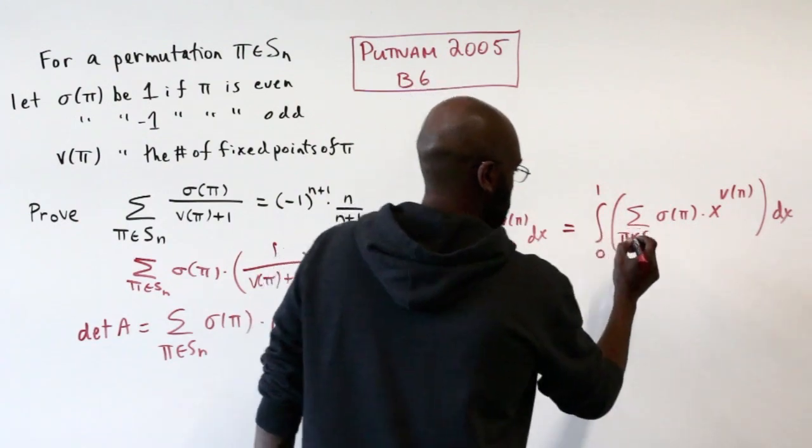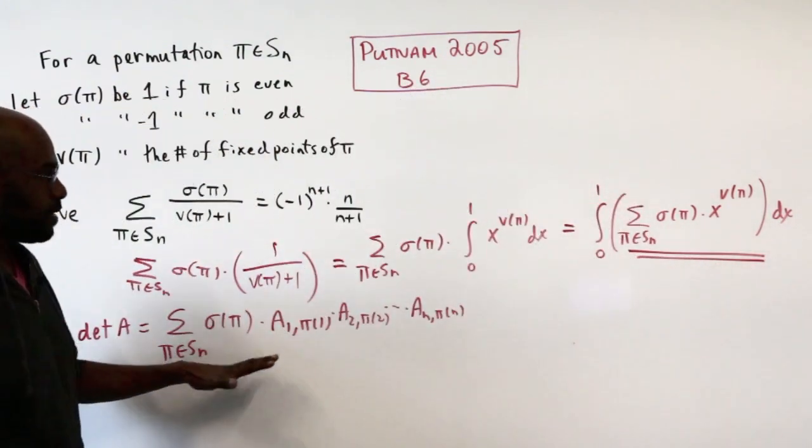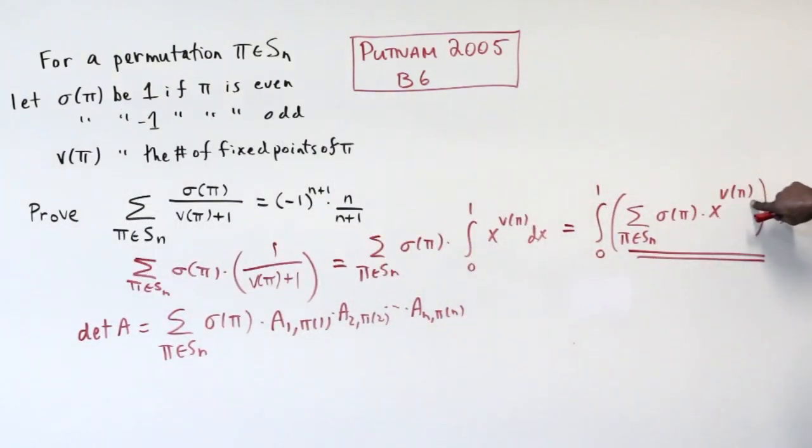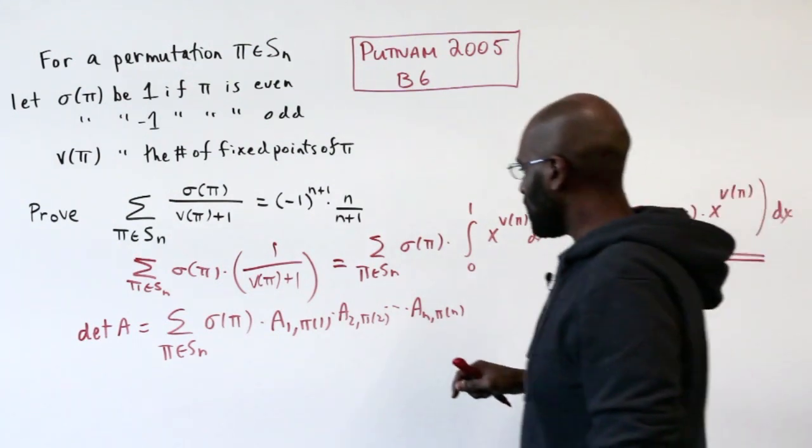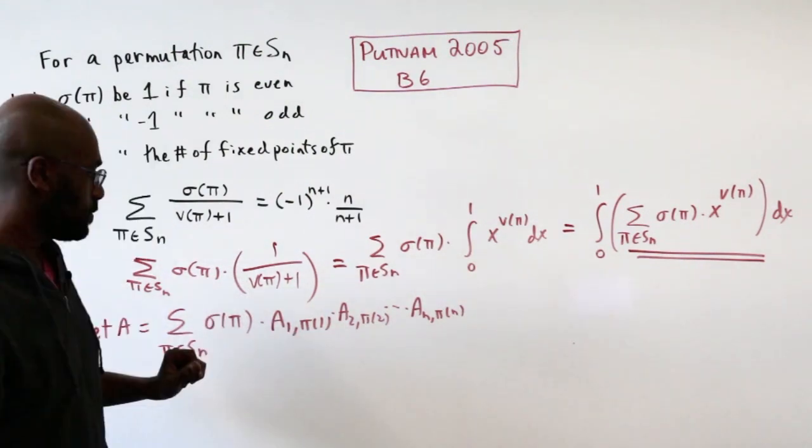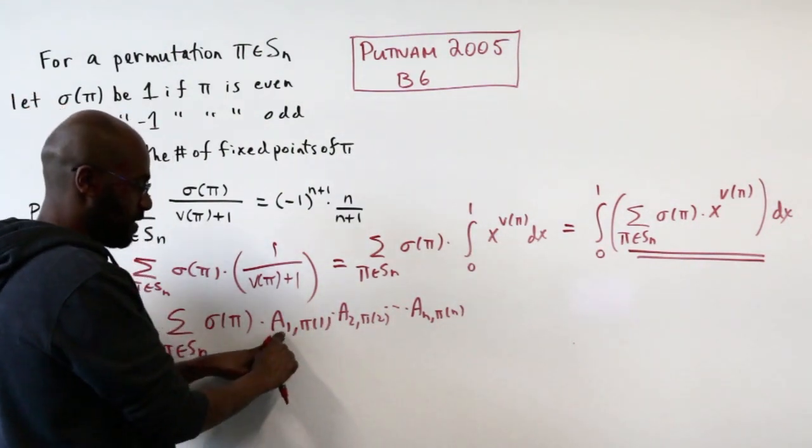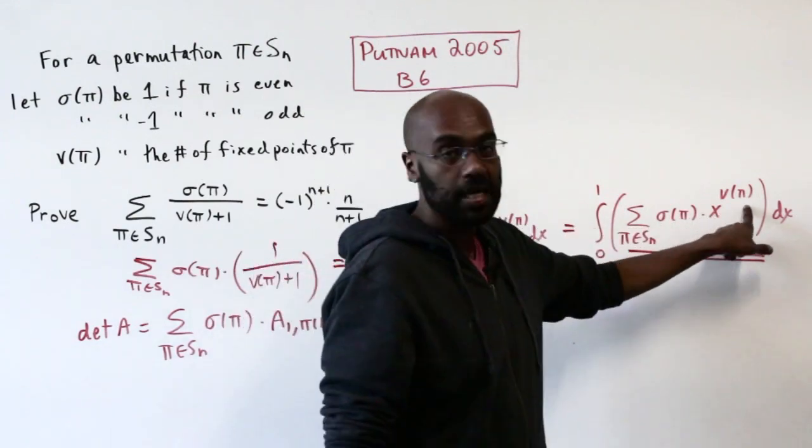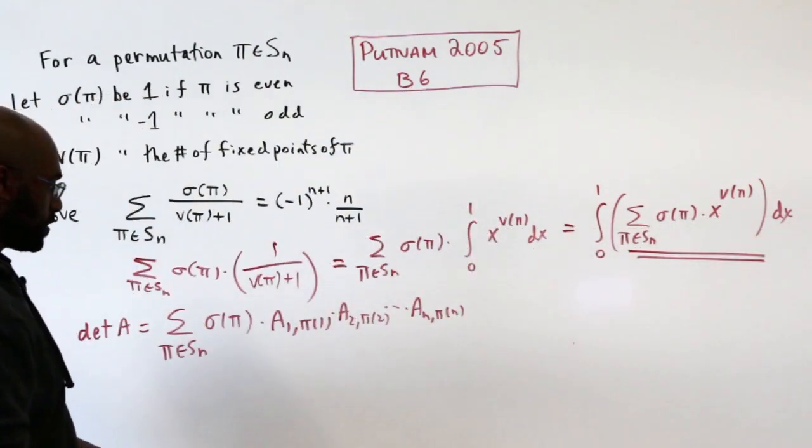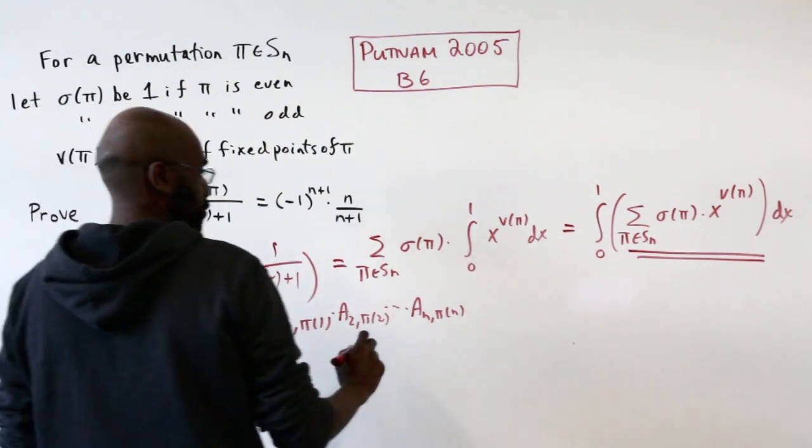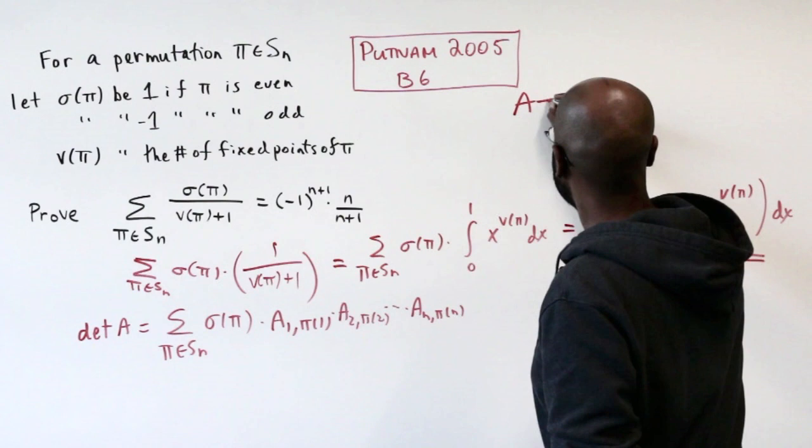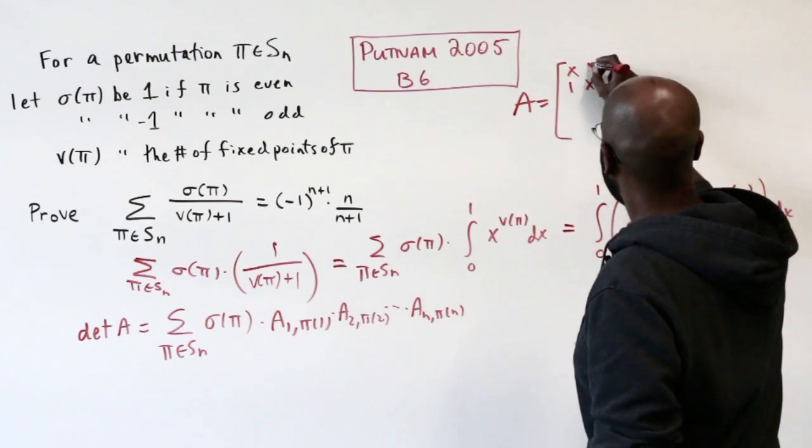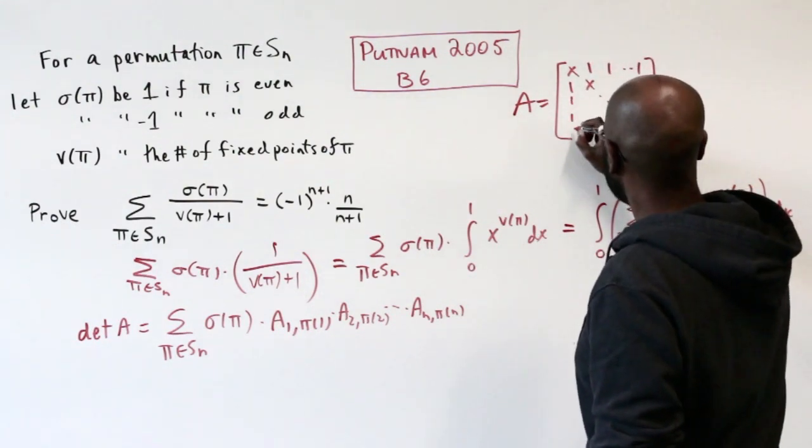Maybe there's a way to find a matrix A where the product of the entries is this x variable to the number of fixed points. We can do that if we have an x every time we have a fixed point. So if π(i) was i, we'd have aᵢᵢ being x, and otherwise we'd have a 1. So we introduce a matrix A whose entries along the diagonal are all x's with 1's everywhere else.